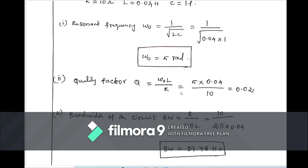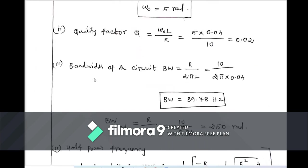There are three formulas for the quality factor: (1) ω₀L / R, (2) 1 / (ω₀CR), and (3) (1/R)√(L/C). We may use any one — all give the same answer. Using ω₀L / R: Q = (5 × 0.04) / 10 = 0.02. The quality factor has no unit; it is a dimensionless number.